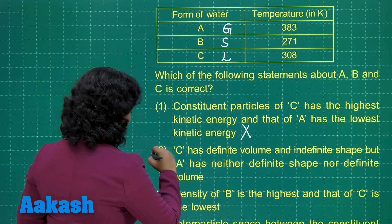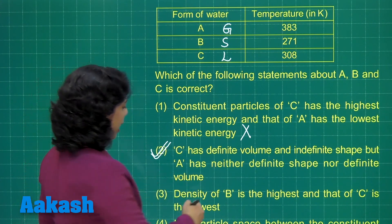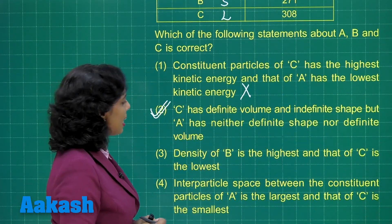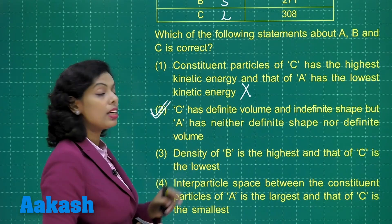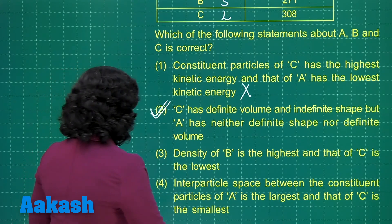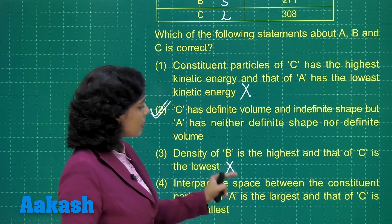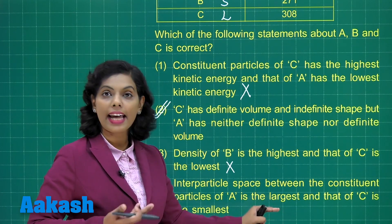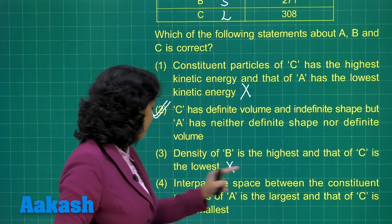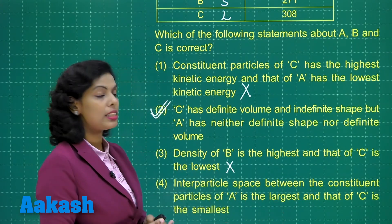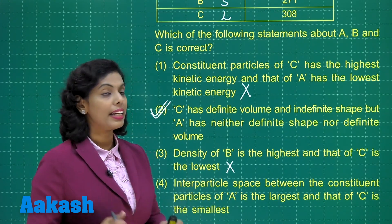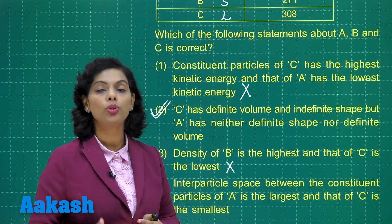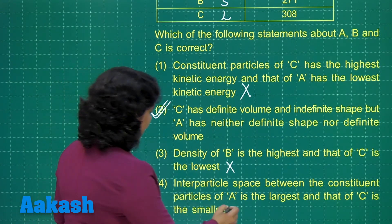This is the correct answer, but we need to look at the remaining options as well. The next option says density of B is the highest and that of C is the lowest — this is also incorrect. Similarly, the inter-particle space between constituent particles of A is the largest, which is correct since A is gas. But it also says C has the smallest inter-particle spaces. Comparing all three, B should have the smallest inter-particle space because B represents the solid state. So this is also incorrect.